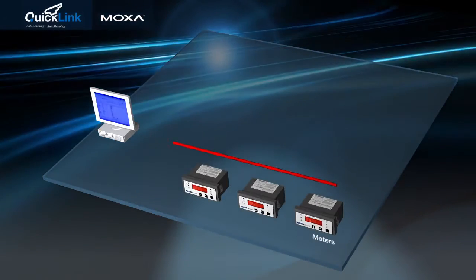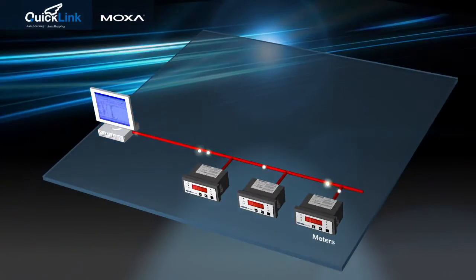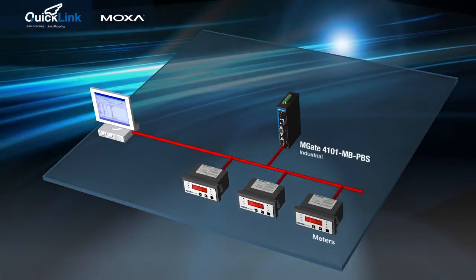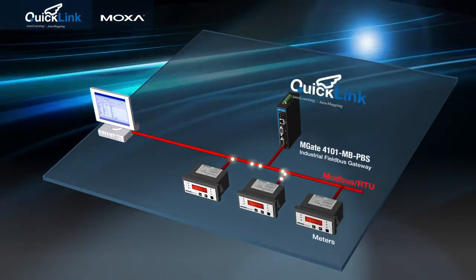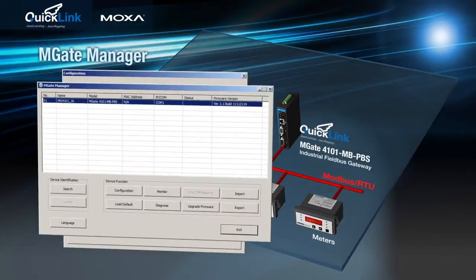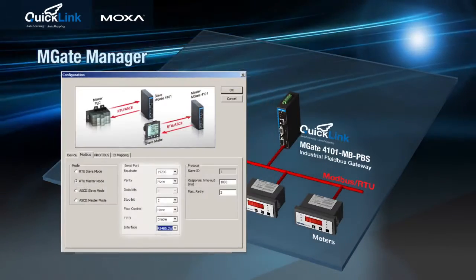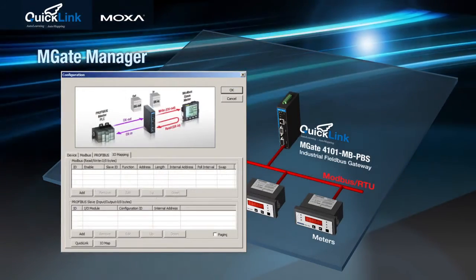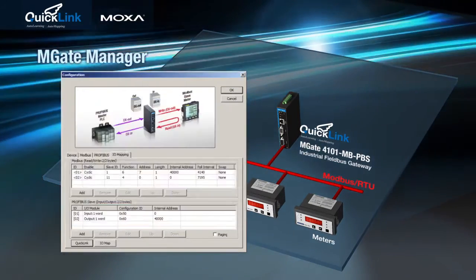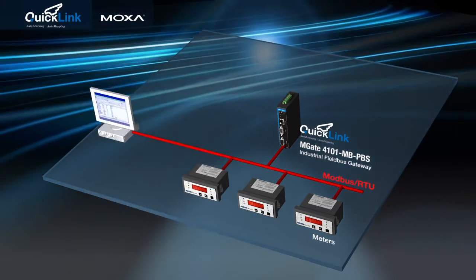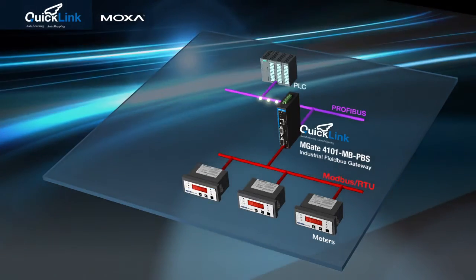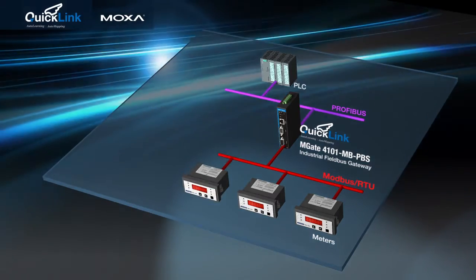You can easily finish gateway configuration instead by starting QuickLink from Moxa's MGate Manager, a Windows-based configuration utility for the MGate series. QuickLink enables quick configuration in just minutes by passively detecting Modbus requests for automated and error-free Profibus I/O mapping.